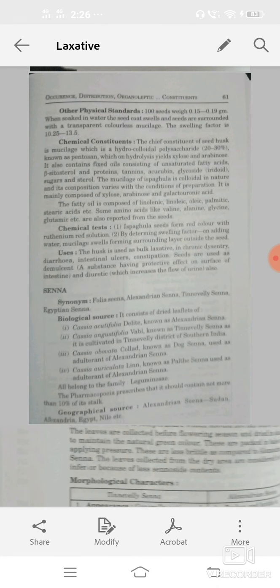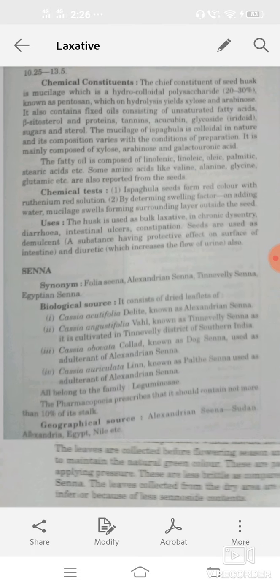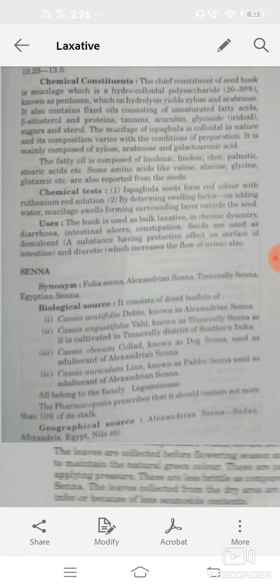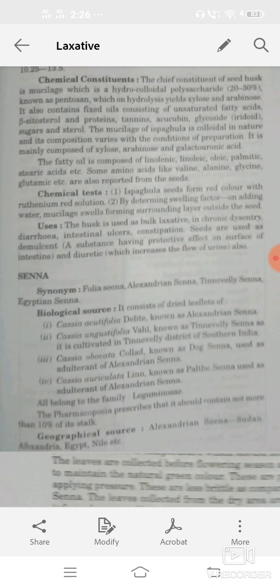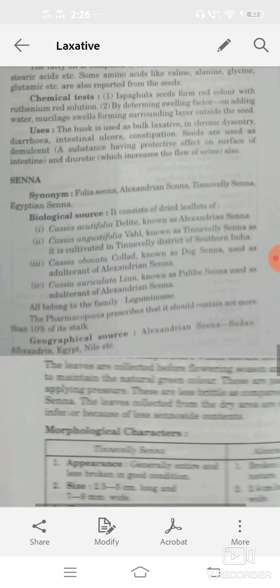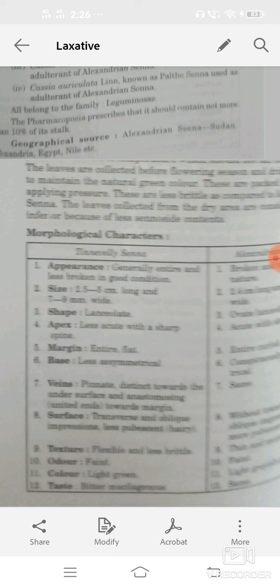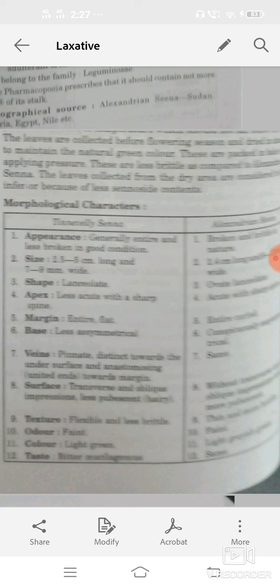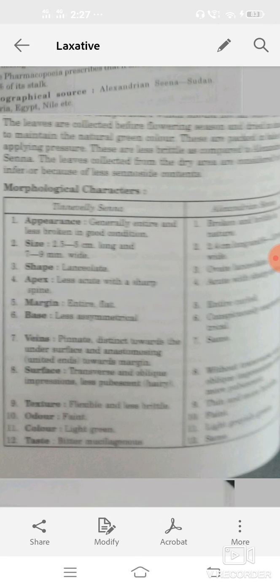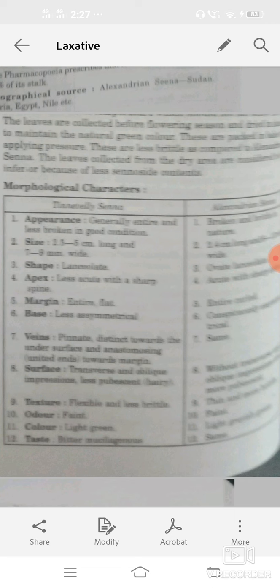Senna: synonym Alexandrian senna, folia senna or Egyptian senna. Senna obtained from dry leaflets of Cassia angustifolia or Cassia acutifolia, belongs to family Leguminosae. Geographical source: Nile, Sudan. Its cultivation or collection: two types of senna. These are differentiated according to their morphological factors. Tinnevelly senna and Alexandrian senna.